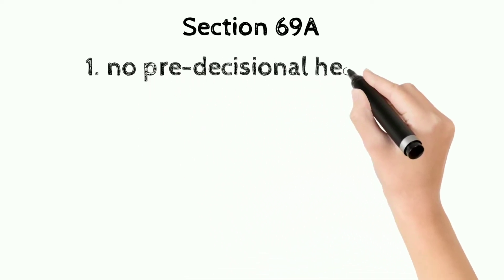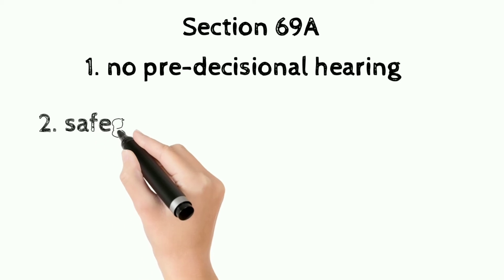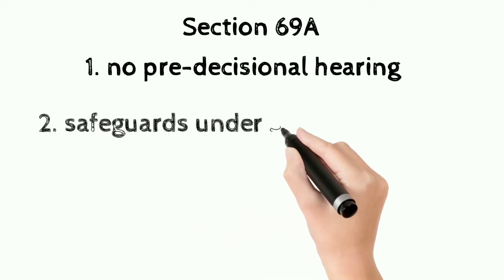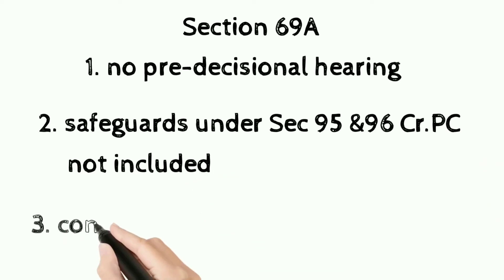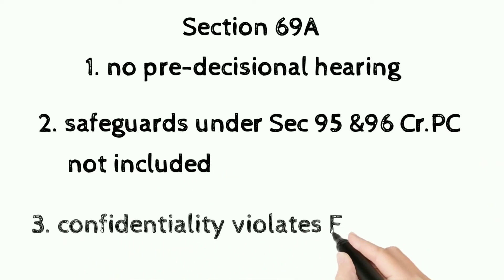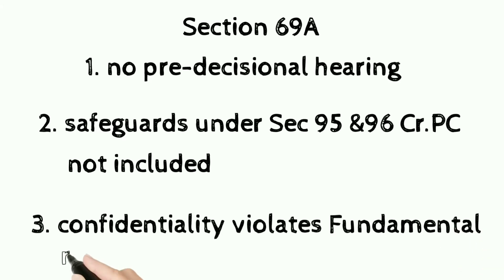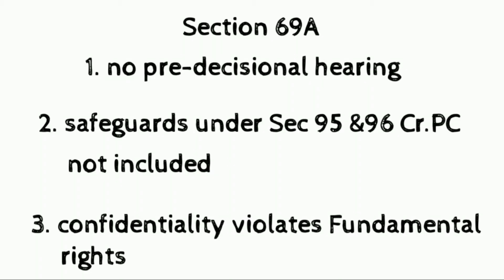There were three important grounds on the basis of which Section 69A was challenged. Firstly, it said that there is no pre-decisional hearing afforded by the rules, particularly to the originator of the information. Secondly, that the procedural safeguards such as those provided under Section 95 and 96 of the Code of Criminal Procedure are not available here. And thirdly, that the confidentiality provision affects the fundamental rights of the people as well.